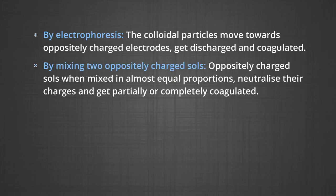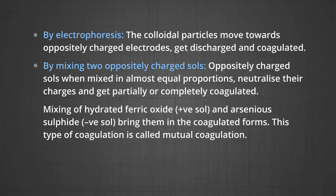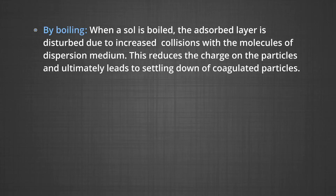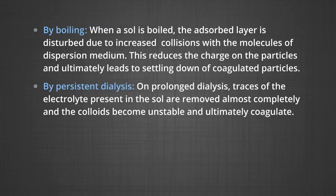Number two, by mixing two oppositely charged sols: oppositely charged sols, when mixed in almost equal proportions, neutralize the charges and get partially or completely coagulated. Mixing of hydrated ferric oxide, which is a positive sol, and arsenious sulphide, which is a negative sol, brings them into coagulated forms. This type of coagulation is called mutual coagulation. Number three, by boiling: when a sol is boiled, the adsorbed layer is disturbed due to increased collisions with the molecules of dispersion medium, reducing the charge on the particles and ultimately leading to settling of coagulated particles. Number four, by persistent dialysis: on prolonged dialysis, traces of electrolyte present in the sol are removed almost completely, and the colloids become unstable and ultimately coagulate.